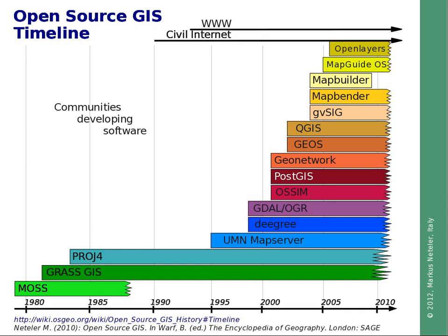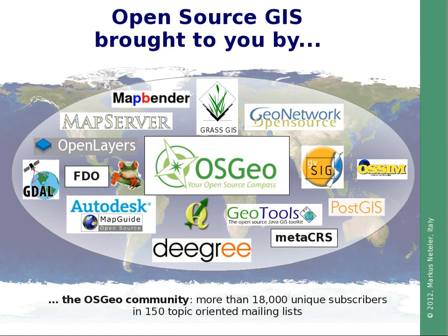In 2005 and 2006, there was discussion about how to bring these projects under a common umbrella, and the idea was to found the OSGEO Open Source Geospatial Foundation. From the logos you can see there are well-known projects among them, including industrial players. As of today, there are more than 18,000 unique subscribers across more than 150 topic-oriented mailing lists.